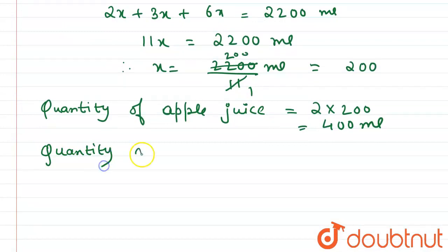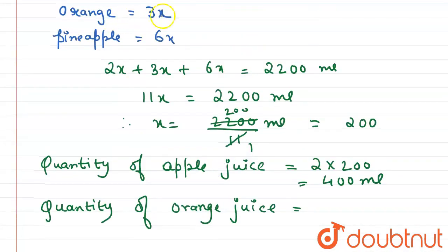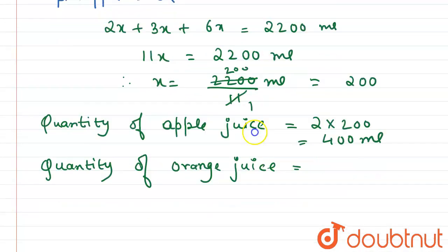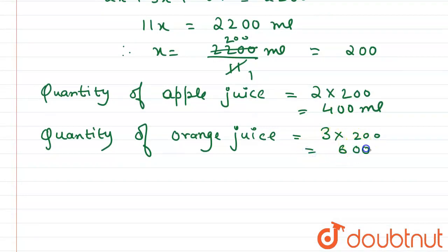Similarly, the quantity of orange juice equals 3x, that is 3 into 200, which gives 600 mL.